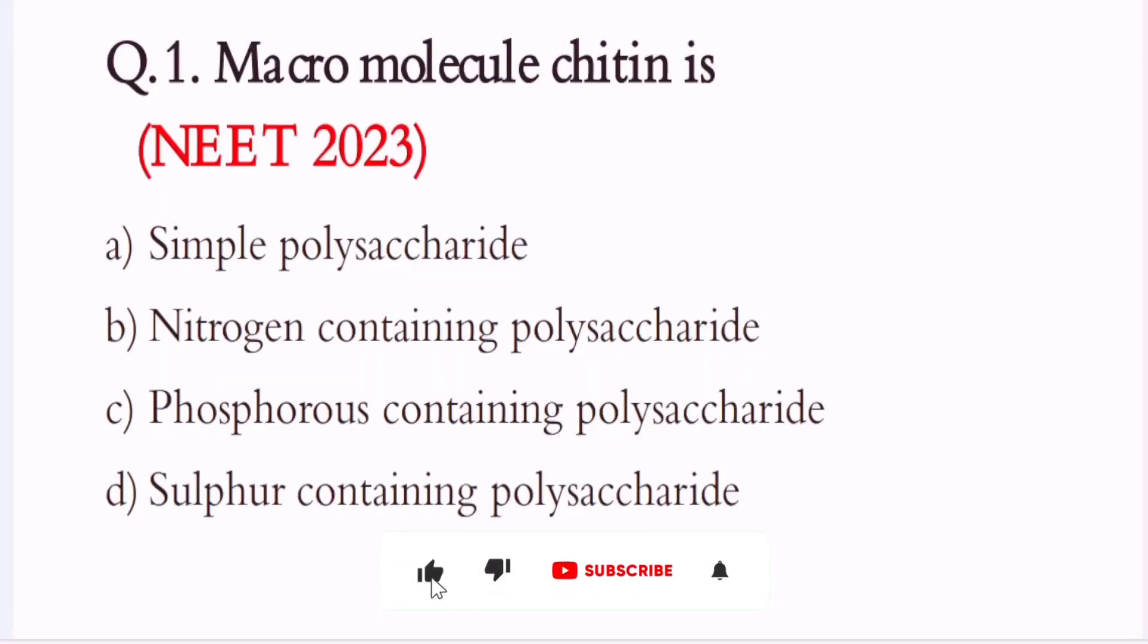Question 1. Macromolecule chitin is: A. Simple polysaccharide. B. Nitrogen containing polysaccharide. C. Phosphorus containing polysaccharide. D. Sulfur containing polysaccharide. The correct option is B. Nitrogen containing polysaccharide.